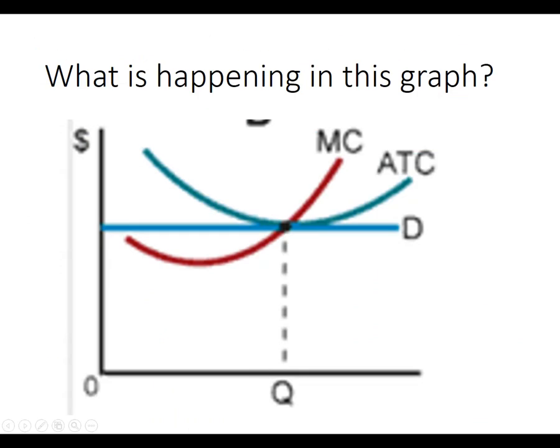Just a couple more review things. Looking at this graph: we've got marginal cost, here's demand. This is a perfect competitor because the demand and the marginal revenue are going to be flat at wherever the price is. The average total cost is crossing right at the price at the profit-maximizing point, so this firm is breaking even. It's going to cost them the same amount to produce as they're bringing in in revenue. This is known as a long-run equilibrium, for other reasons we've discussed before.